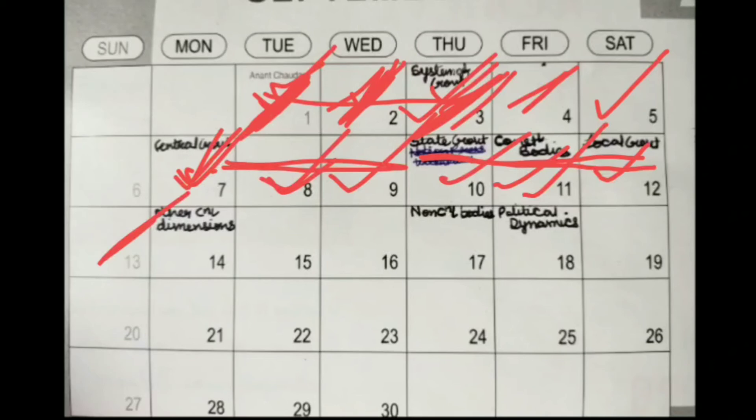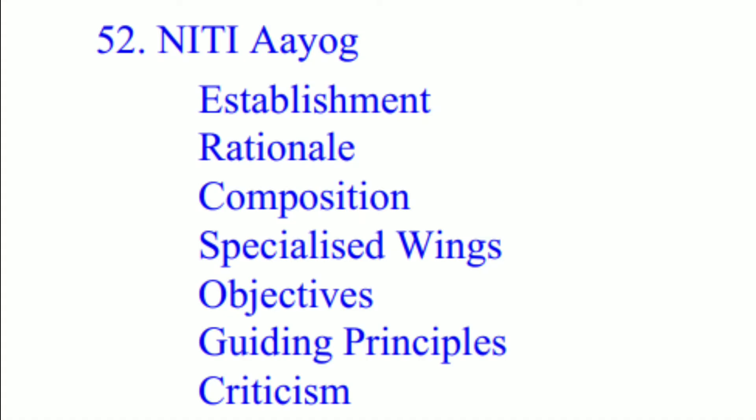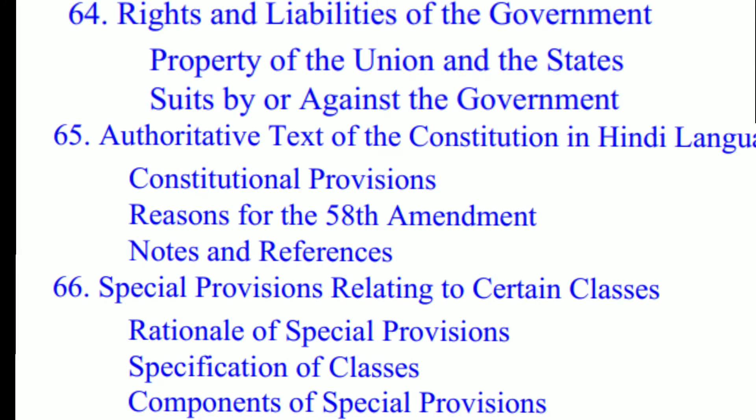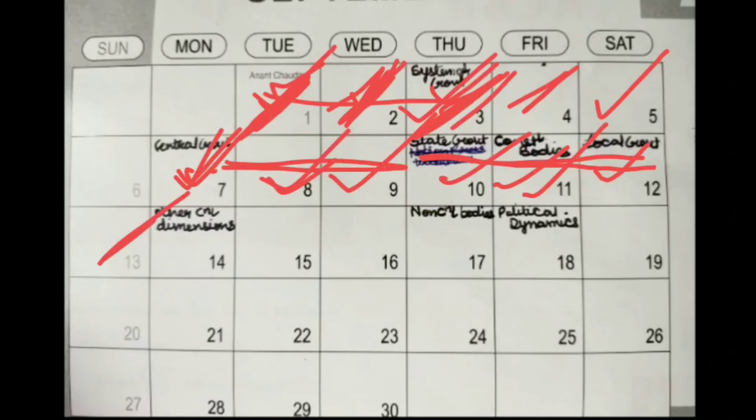On day fourteen, you do chapter 52 — NITI Aayog — which is about 10 to 12 pages, so I wanted to give it time. You also do chapters 64, 65, and 66, which are again very small portions you just need to go through so you don't go blank if asked. With day fourteen, your other constitutional dimensions portion — Part 9 — will also be done.